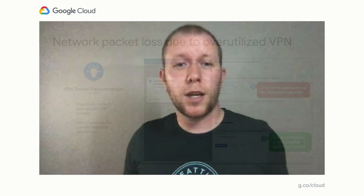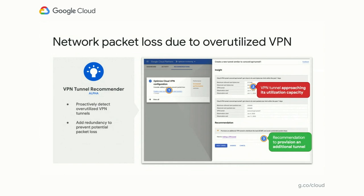While on this topic of networking optimization opportunities, Steve also notices a VPN tunnel over-utilization recommendation. This wasn't even top of mind, but fixing this now could prevent major headaches later. Looks like one of the VPN tunnels on his project has been approaching its utilization capacity and is likely to turn into a bottleneck within the next few days. So he proactively notifies the networking team to make sure they look into adding some redundancy before this over-utilized VPN becomes a real problem.